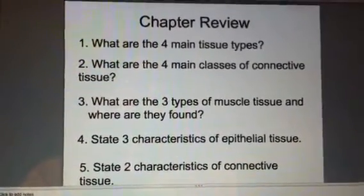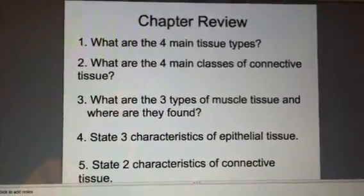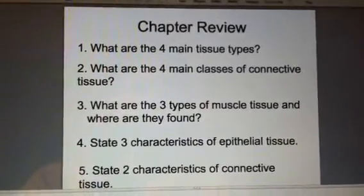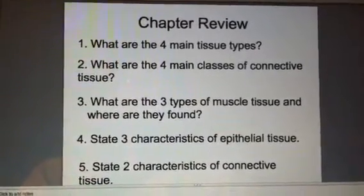Number one, what are the four main tissue types? So hopefully you'll be able to do that. Number two, the four main classes of connective tissue. And then three, the three types of muscle tissue and where they are found.